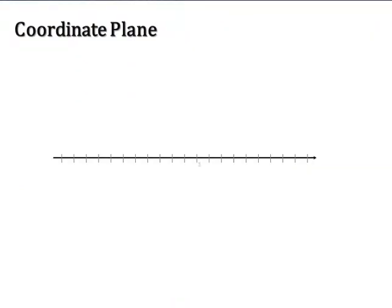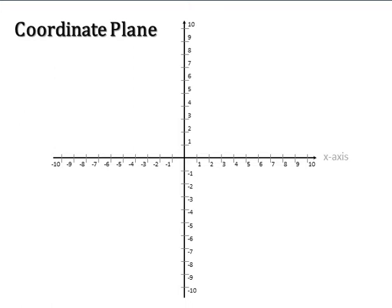The coordinate plane is basically made by two number lines, one horizontal and one vertical. The horizontal number line is called the X axis and the vertical, the Y axis. The point where the two axes cross is called the origin.